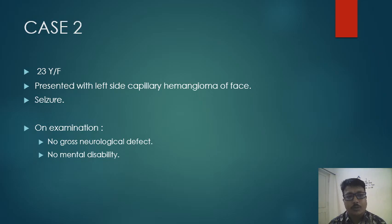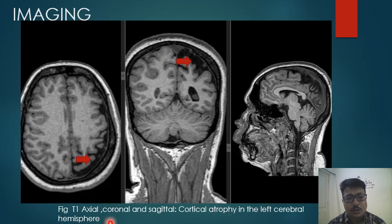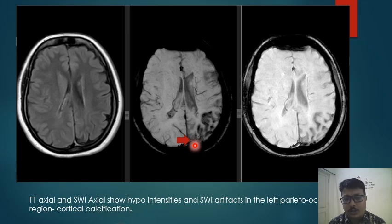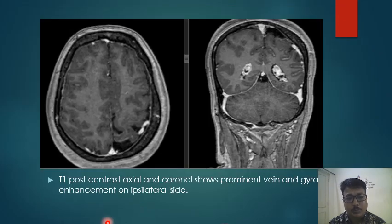Case 2 is a 23-year-old female who presented with left capillary hemangioma of the face. She also presented with seizure, and on examination there was no neurological deficit; mental disability or mental retardation was not found. Imaging showed T1 axial, coronal, and sagittal sections demonstrating hemiatrophy of the left cerebral hemisphere in the form of prominence of the sulci. Susceptibility weighted imaging shows signal dropout in the left occipital region signifying calcification, identified by the red arrow. Post-contrast axial and coronal images show prominence of veins and gyral enhancement on the ipsilateral side.